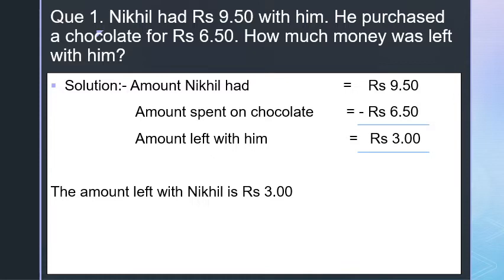So 9.50 minus 6.50. Starting from the right side: 0 minus 0 is 0, 5 minus 5 is 0, 9 minus 6 is 3. So the amount left with him is Rs. 3. The amount left with Nikhil is Rs. 3.